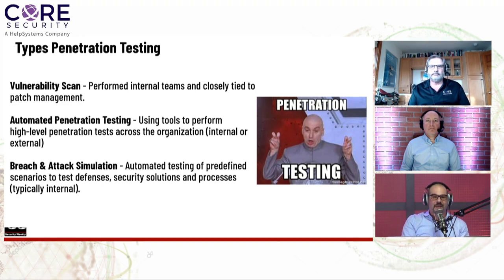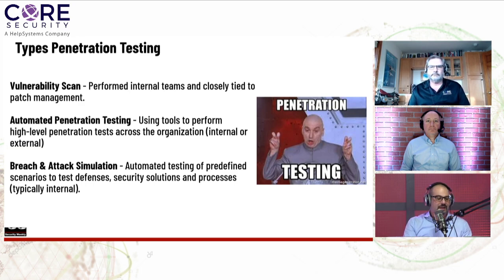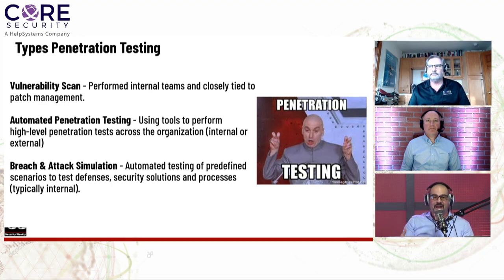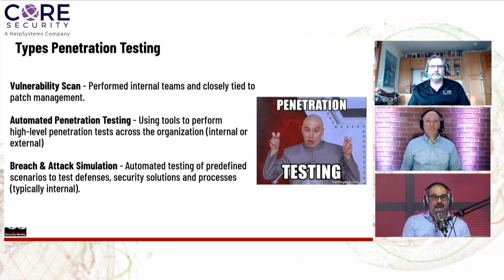Automated penetration testing uses tools to perform a high-level pen test — consuming vulnerability scanning results and automating the exploitation. Core Impact can fit in this category, though it fits many others as well. This is often done internally by small teams to verify and understand some of the impacts of vulnerabilities they're discovering. Core Impact can automatically pull back data including a screenshot from a host, and post-exploitation can be automated as well.